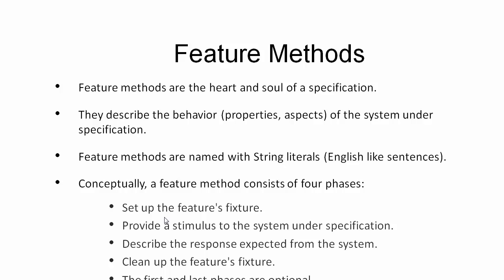In this tutorial we are going to talk about feature methods. Feature methods are the heart of any specification class because they normally define the properties and aspects of the application that we are going to test. In general, a feature method is going to have string literals — the name we provide to any feature method will be a complete English sentence, and that sentence should describe what kind of action we are going to perform within that specific feature method.